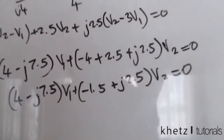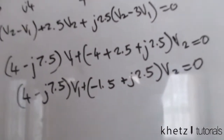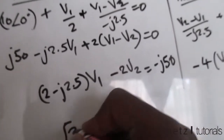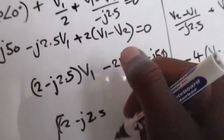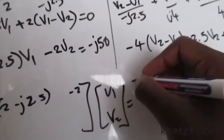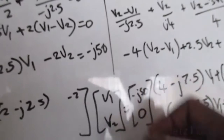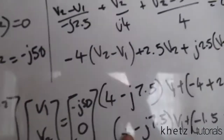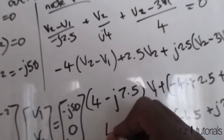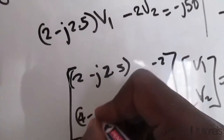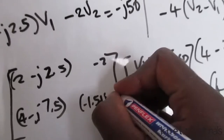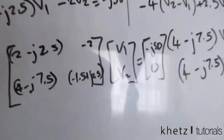We will use Cramer's rule to find V1 and V2. Transforming the two equations into matrix form, the coefficient matrix has entries: row 1: (2 − j2.5), (−2); row 2: (4 − j7.5), (−1.5 + j2.5). The right-hand side vector is [−j50, 0].